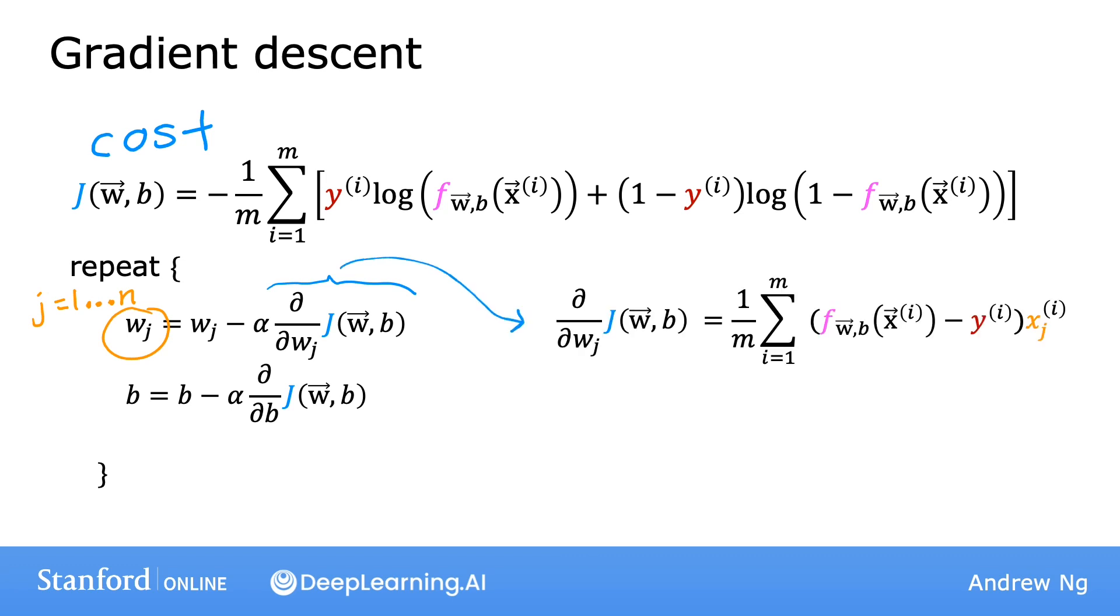is 1 over m times the sum from 1 through m of this error term, that is, f minus the label y times x_j. Here, this x_ij is the j feature of training example i.